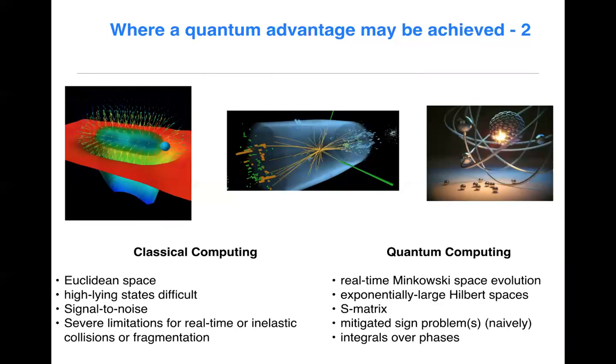On the other hand, quantum computing, if you had a perfect quantum device, then one will be able to address most of these problems. So one's working with real-time Minkowski space evolution to begin with, and so one can start with some initial state and time evolve it. It could be some highly out of non-equilibrium state, for instance, a 100 GeV particle decay. One's able to access exponentially large Hilbert spaces. Every time one adds a qubit to your quantum register, then you've doubled the size of the available Hilbert space. One's able to extract S-matrix elements in principle.